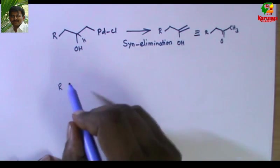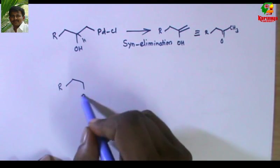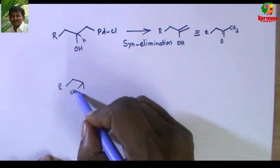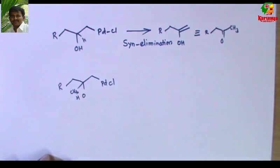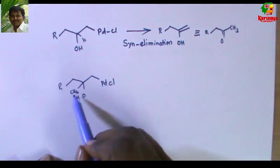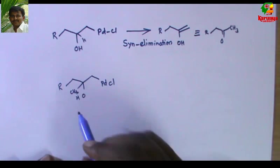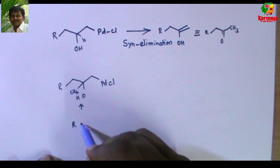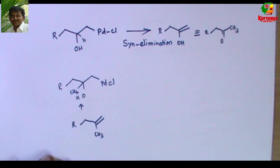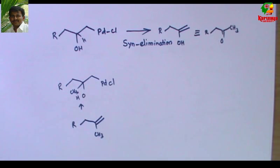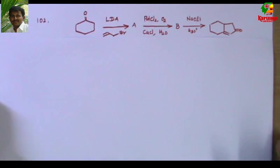For example, consider a compound where instead of hydrogen there is a methyl group. This compound can be obtained by treating the appropriate substrate with palladium chloride and water. Because there is no cis hydrogen available, this compound will not undergo syn elimination.